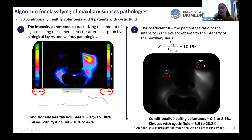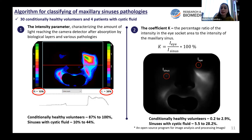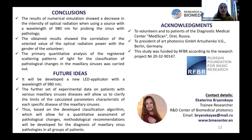The values of intensity in the ipsilateral area and in the sinus area were obtained by the imaging program. At the moment, we conducted studies only for patients with cystic fluid and for conditionally healthy volunteers. In this slide you can see the obtained limits of calculated parameters for these two cases. In the future, we are going to collect experimental data for patients with various pathologies to clarify our parameters, and this will allow us to form new diagnostic criteria.